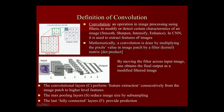In the CNN, convolution is used to extract specific features of the image. Mathematically, convolution is performed by multiplying pixel values in the image by a filter — also known as the kernel — as a matrix dot product. By moving the filter across the image, you obtain the final output as the modified filtered image. The convolutional layer performs feature extraction, followed by pooling layers that condense the data.